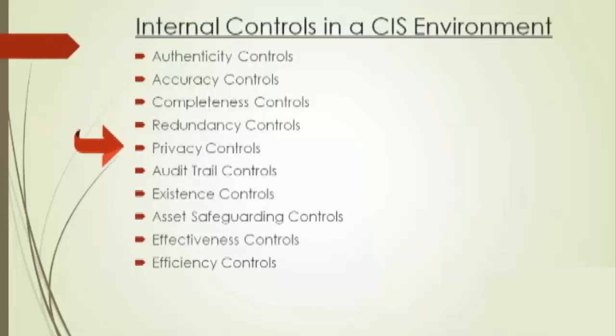Next comes privacy controls. Privacy controls ensure that data is protected from inadvertent or unauthorized disclosure. That is why data compaction, cryptography, and inference controls are available. Passwords are set on files for this reason — to protect data from any kind of unauthorized disclosure.